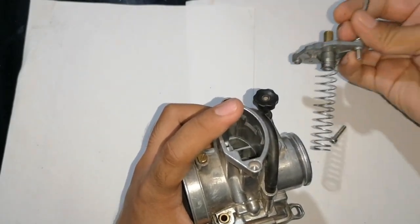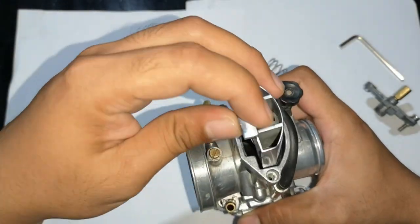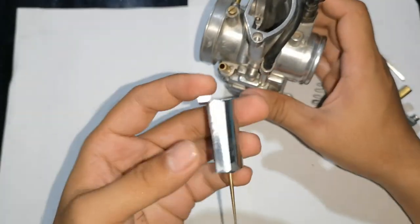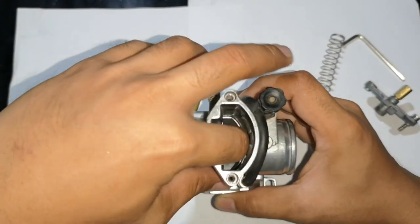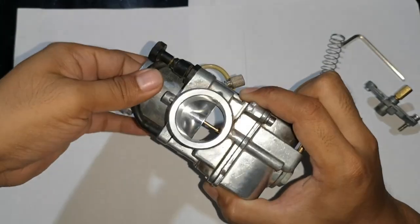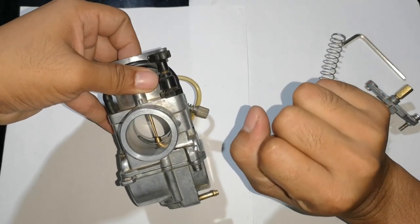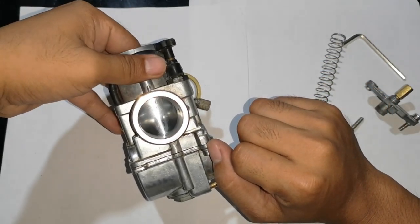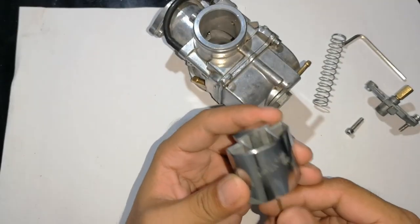So, ito na. Ito ang spring. So, ito, ang tinatawag natin na slide cutaway, or slide, or piston na tinatawag. Ito siya ang, dito nakakonect ang cable. Kapag pinipihit natin, ganyan, ito siya ang tumataas. Pag pinihit natin, ganyan, tumataas ito. So, yan. Yan yung purpose nya. So, dito naman, sa slide cutaway na to, meron siyang needle.